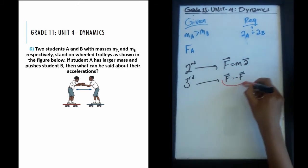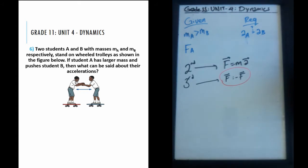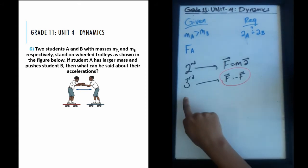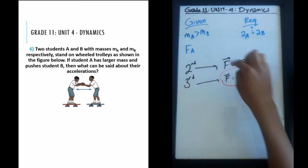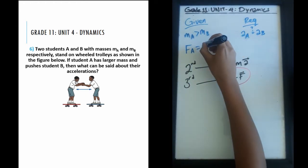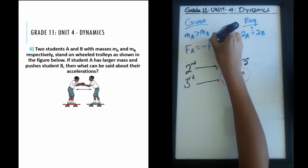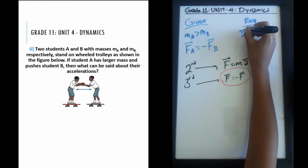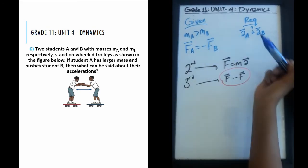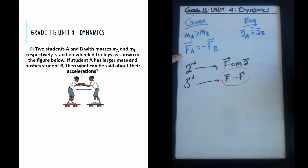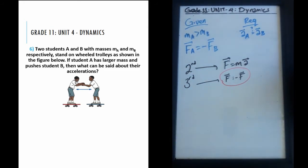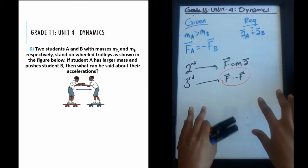Starting with the third law: we know student A pushes student B. By Newton's third law, we can conclude that student B pushes student A back with an equal and opposite force. These are vectors, so the negative sign represents the opposite direction. The question only states that student A applies a force, but we can conclude student B applies an equal and opposite force.